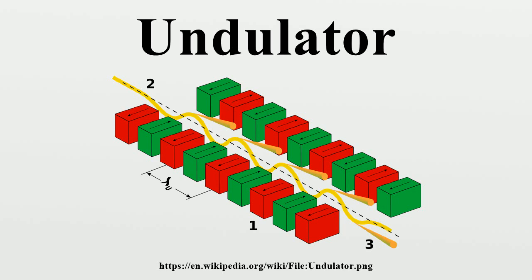Electrons traversing the periodic magnet structure are forced to undergo oscillations and thus to radiate energy. The radiation produced in an undulator is very intense and concentrated in narrow energy bands in the spectrum. It is also collimated on the orbit plane of the electrons. This radiation is guided through beamlines for experiments in various scientific areas.